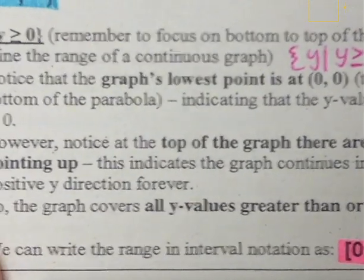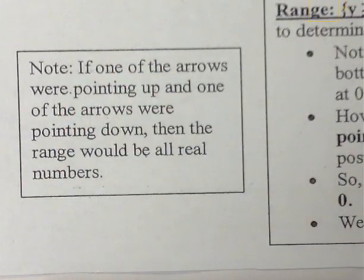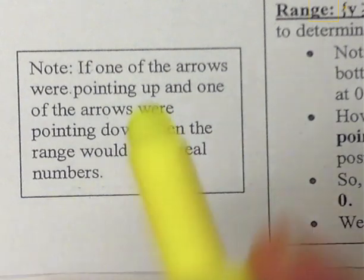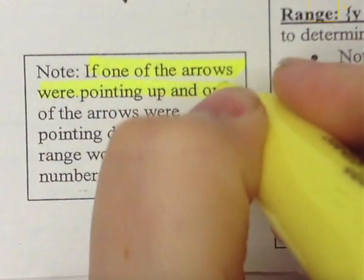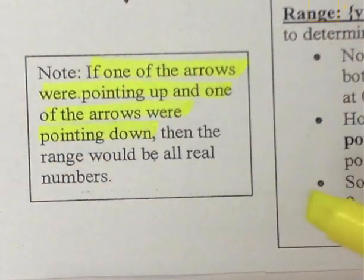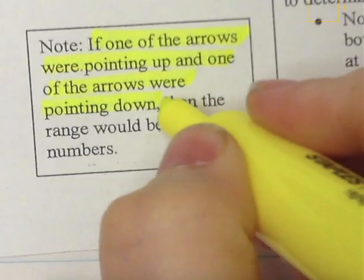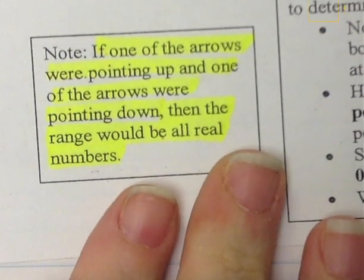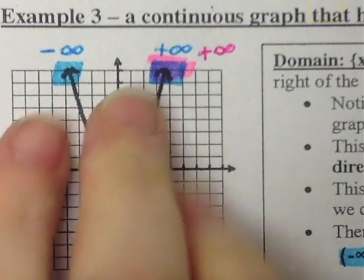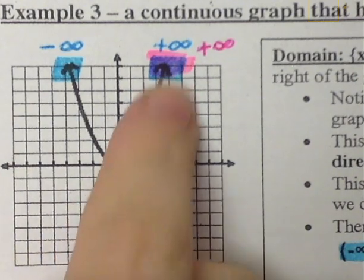One other note, because there were two arrows on here: if one of the arrows were pointing up and one of the arrows were pointing down, then the range would also be all real numbers. Because the arrows were both pointing up in this example, the range started at a value and then went up forever.